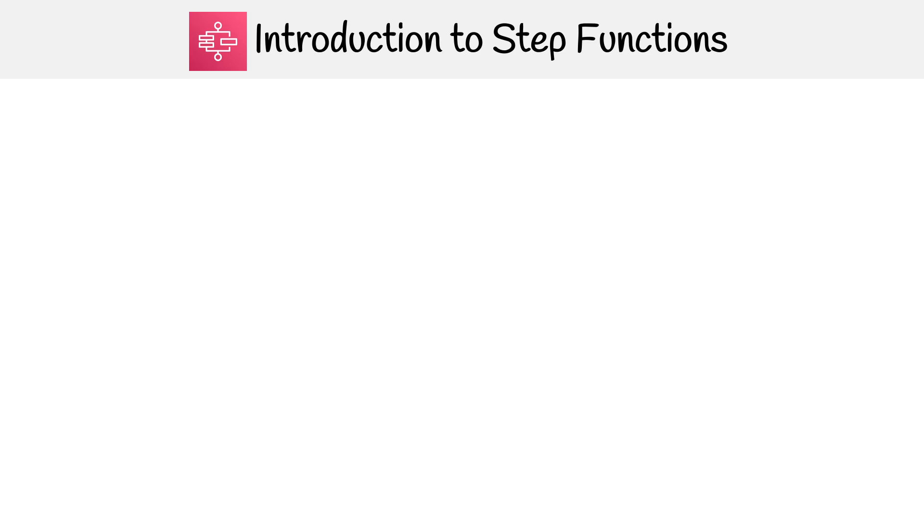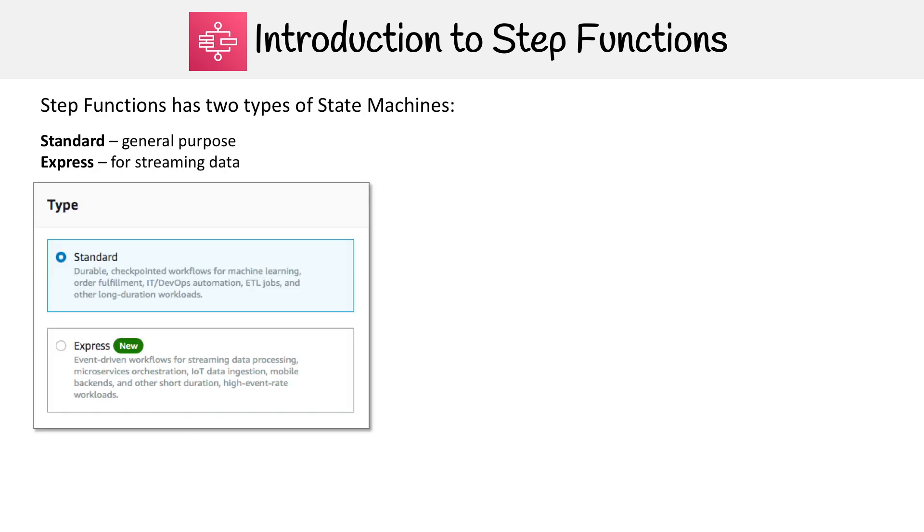Before we move on to use cases, let's talk about the two types of state machines. When you make a Step Function, you have to choose a state machine: Standard is for general purpose stuff, and Express is for streaming data kind of stuff.